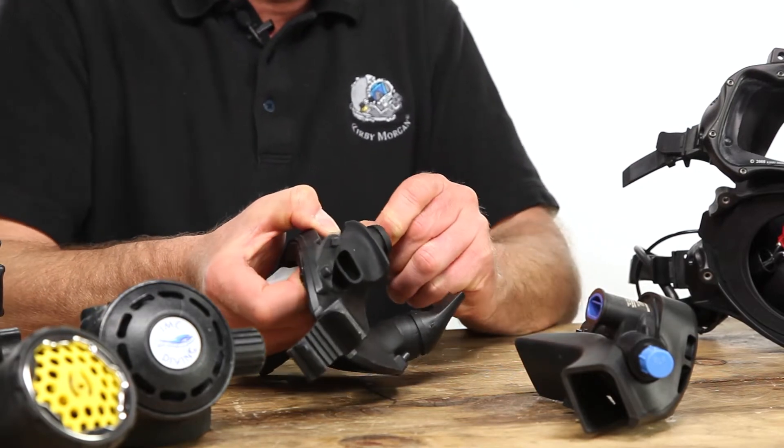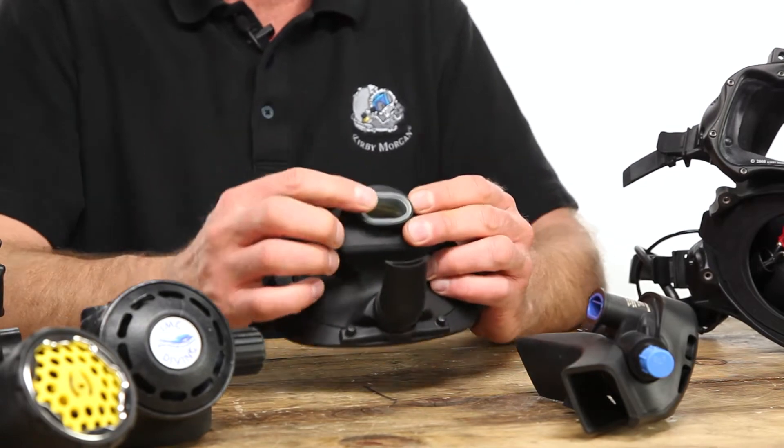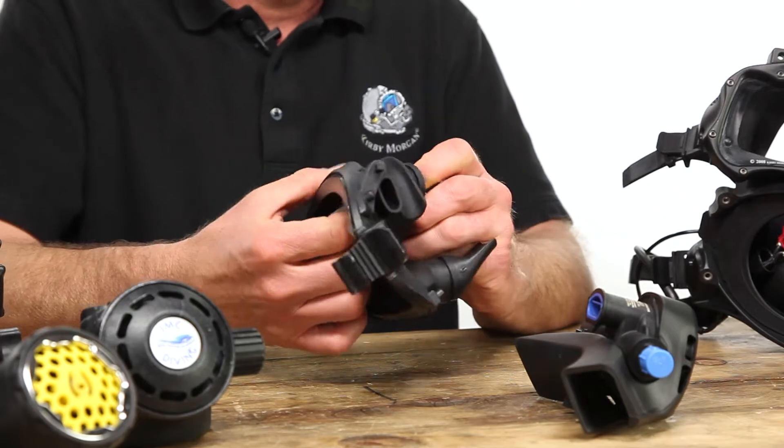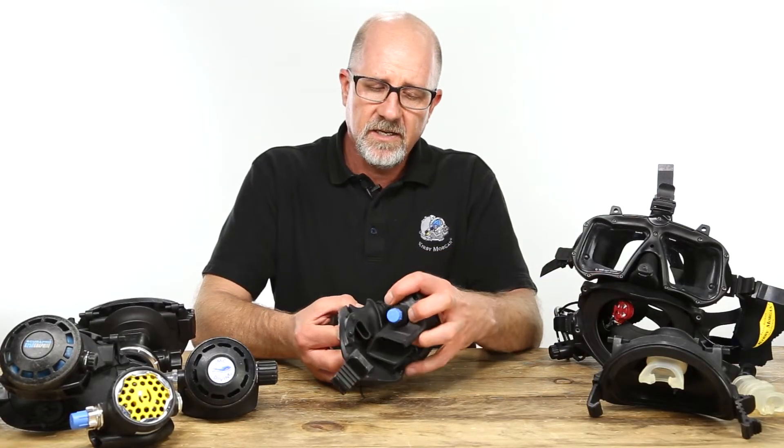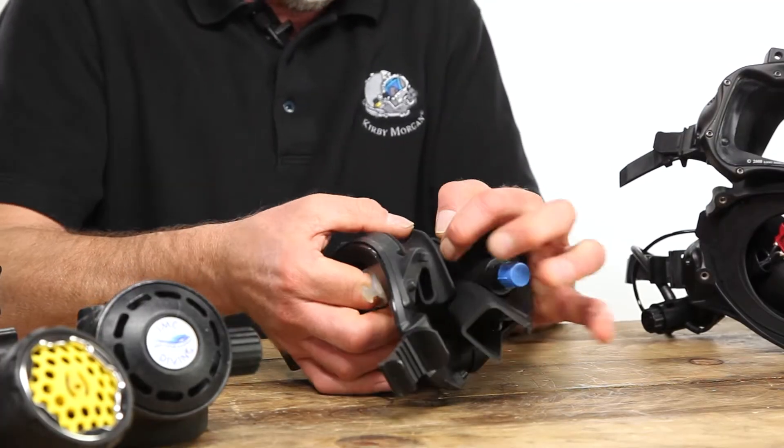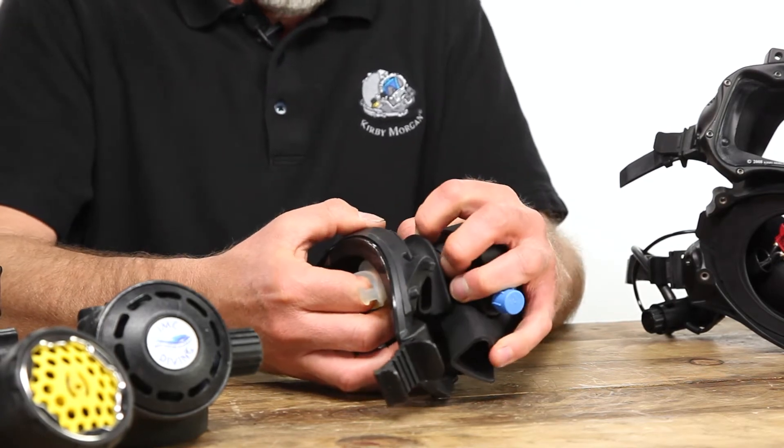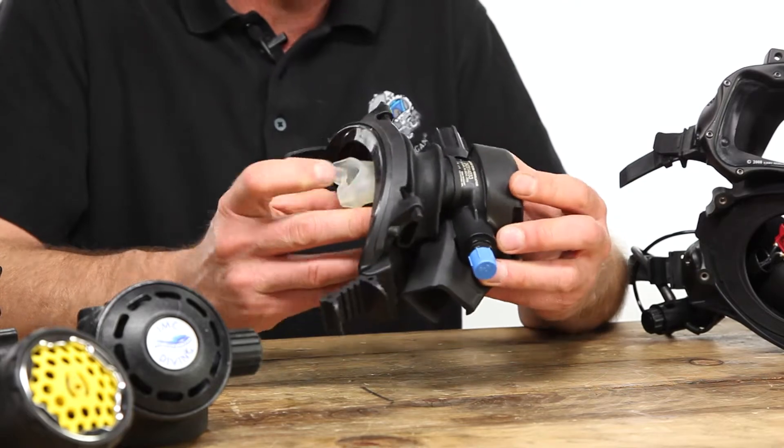Make sure the edge of the mouthpiece is flush with the pod cover. Take a finger, insert it into the mouthpiece with the other hand. Insert the mounting tube into the mouthpiece and be sure to push the mounting tube into the scuba pod as far as it will go.